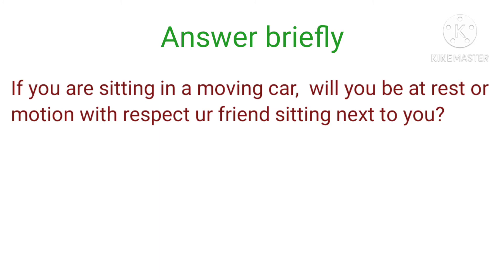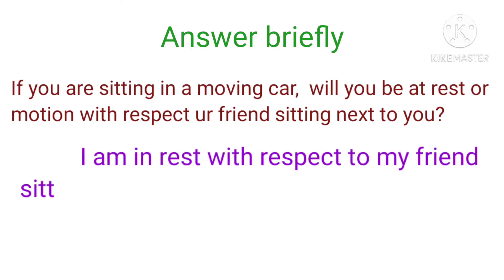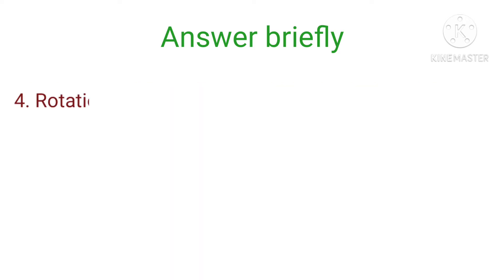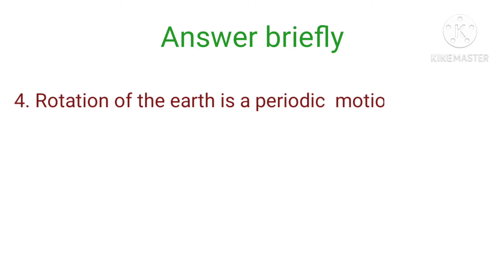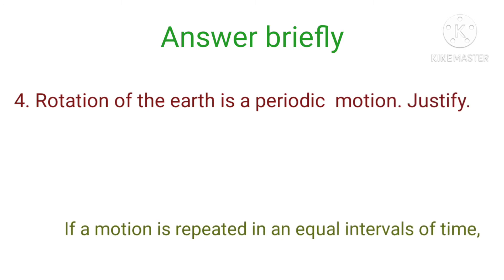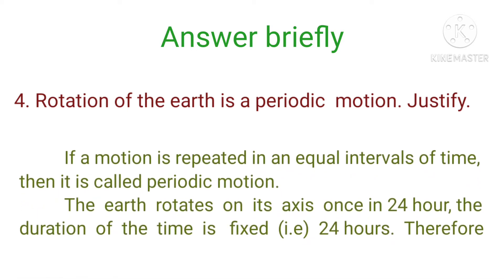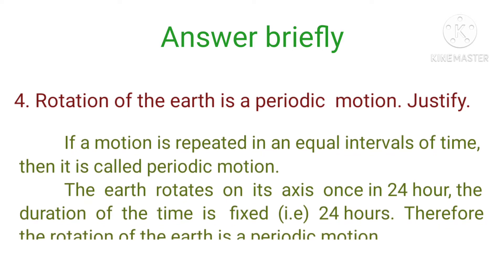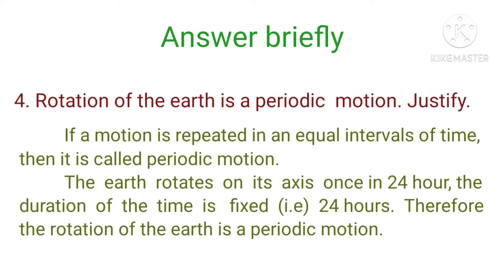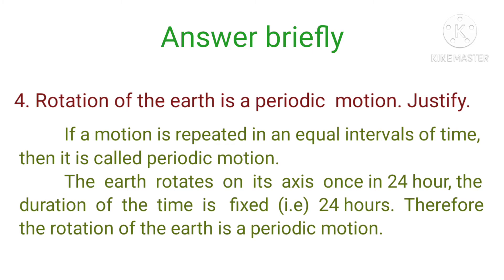Answer: I am at rest with respect to my friend sitting inside the car. Fourth question: rotation of the earth is a periodic motion — justify. If a motion is repeated at equal intervals of time then it is called periodic motion. The earth rotates on its axis once in 24 hours, and the duration is fixed at 24 hours. Therefore the rotation of the earth is a periodic motion.